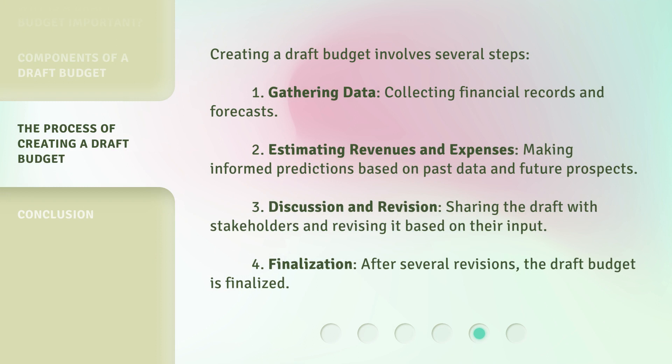Creating a draft budget involves several steps. 1. Gathering data — collecting financial records and forecasts. 2. Estimating revenues and expenses — making informed predictions based on past data and future prospects. 3. Discussion and revision — sharing the draft with stakeholders and revising it based on their input. 4. Finalization — after several revisions, the draft budget is finalized.